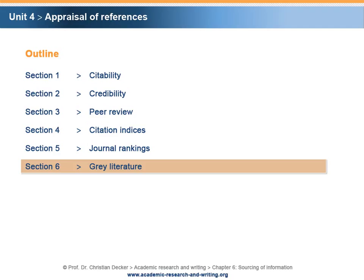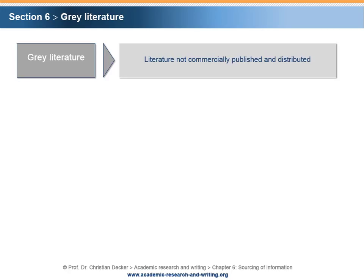Section 6: Gray Literature. Gray literature is a commonly used term which, generally speaking, refers to literature that is not commercially published and distributed. Metaphorically speaking, white literature could refer to literature that is credible, and black literature could refer to literature that is not credible. However, some types of literature cannot unambiguously be characterized — this literature is referred to as gray literature.